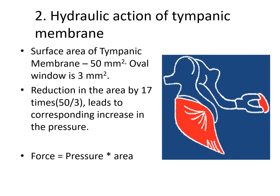The second mechanism by which the middle ear amplifies sound is the hydraulic action of the tympanic membrane. The surface area of the tympanic membrane is roughly 50 mm² and the surface area of the oval window is about 3 mm². This is a reduction in surface area by about 17 times (50 mm² divided by 3 mm²).